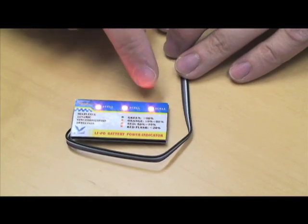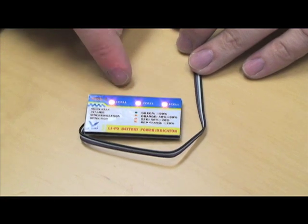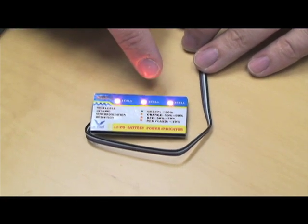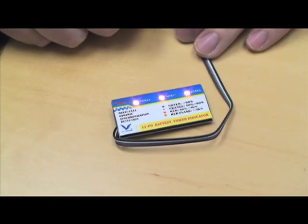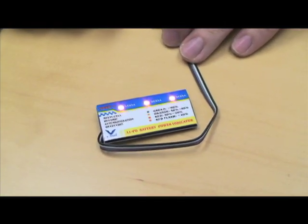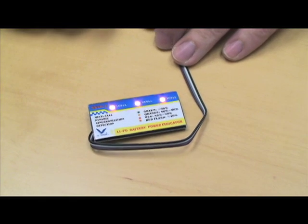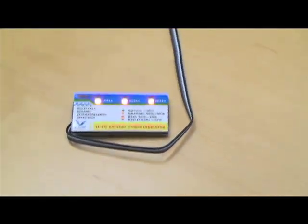This one's showing orange. That indicates it has anywhere between 50 and 90% of its charge. That way you can monitor this device and as you're running, if it gets to where it's flashing red, you know to unplug your vehicle and stop using it and recharge your LiPo. It's a great safety device.